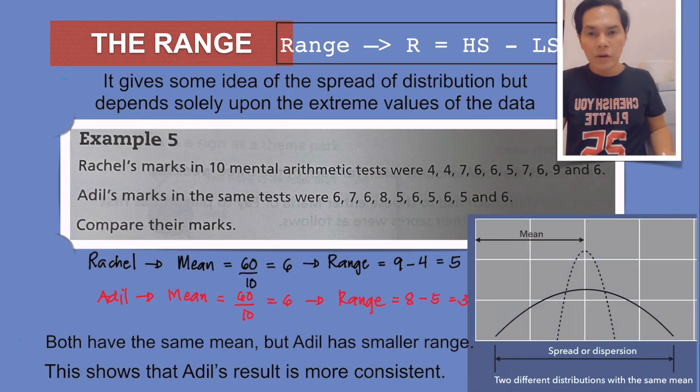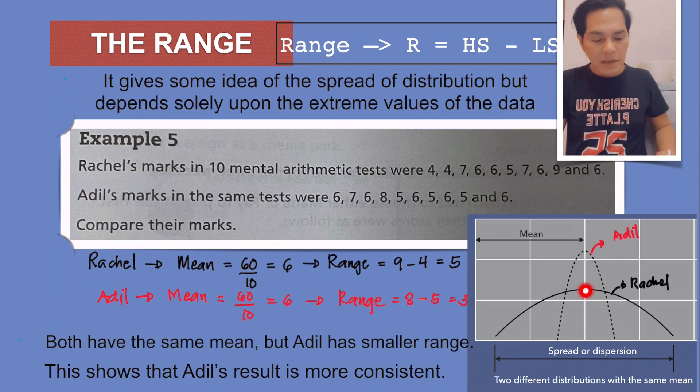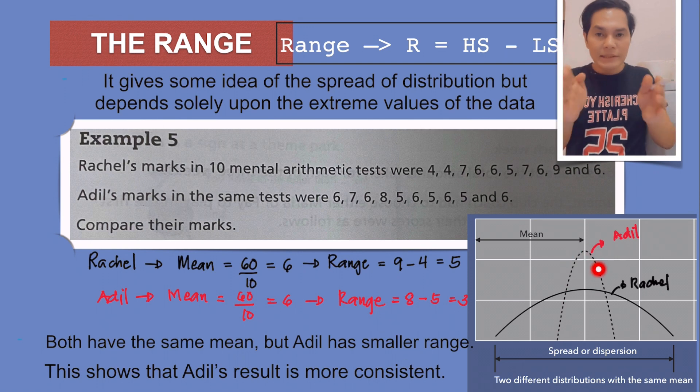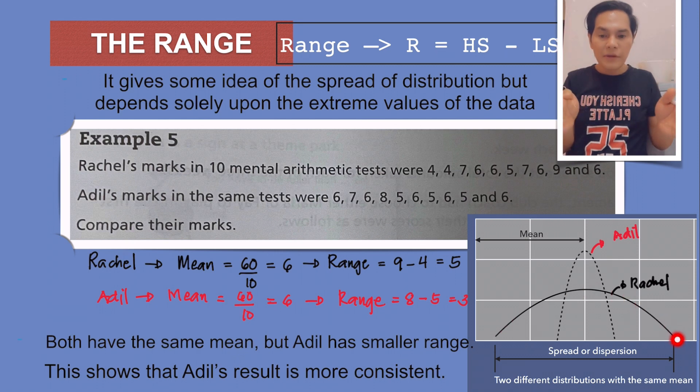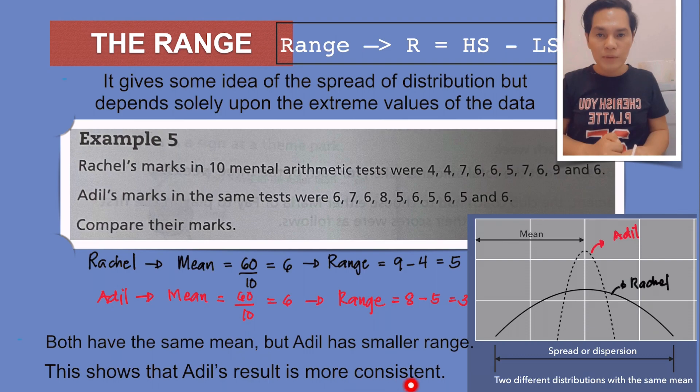Look at the illustration here where we can explain better the marks of Rachel and Adil. The broken line represents Adil and the solid line represents Rachel. These are two different distributions with the same mean, but when it comes to the range, Adil is more consistent. It's narrower than the range of Rachel. Therefore, that's the reason why Adil's result is more consistent.